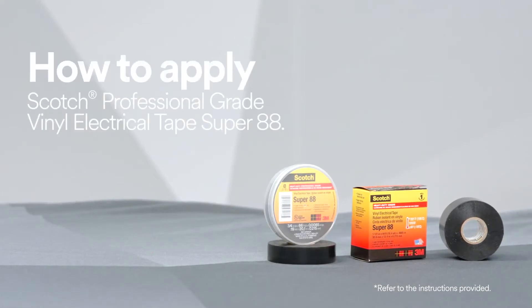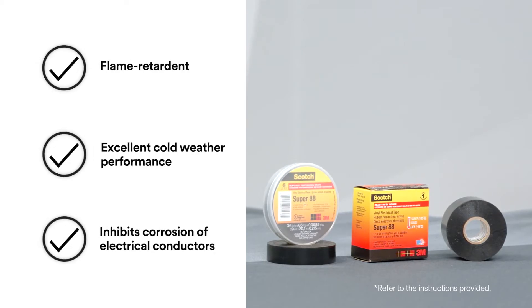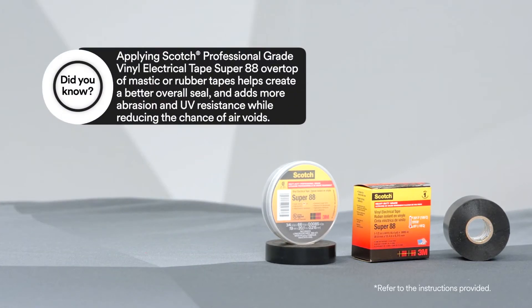To help protect against abrasion, chemicals, and UV radiation, use Scotch Professional Grade Vinyl Electrical Tape Super 88. It can be used as low voltage primary insulation, less than 600 volts, and the extra thickness and vinyl makeup will enhance and protect in many electrical applications.